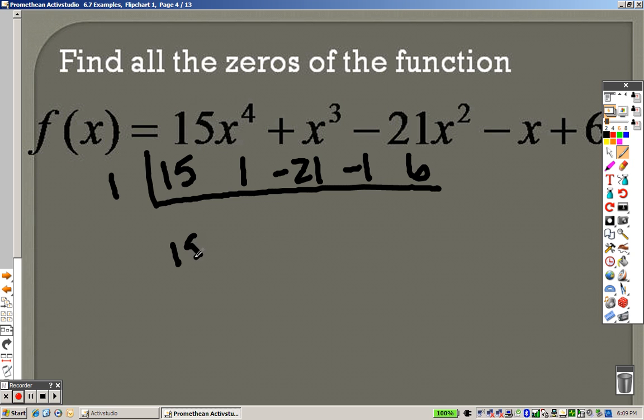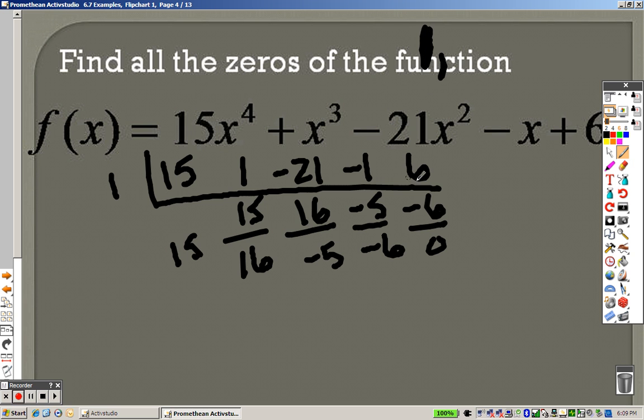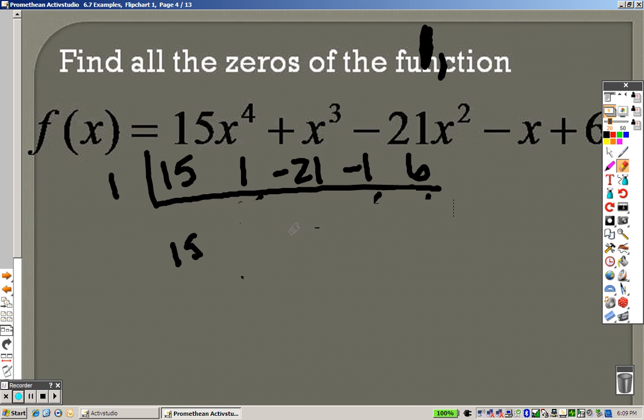So I bring down a 15. 15 times 1 is 15. I add them together to get 16. 16 times 1 is 16. I add them together to get negative 5. Negative 5 times 1 is negative 5. I add them together to get negative 6. Negative 6 times 1 is negative 6. I add them together to get 0. So that worked. Luckily enough, again, 1 worked. So I have a 1 as my answer. So far, so good. So let me quickly erase this and start again. So I tried out 1, and that worked. And now I don't remember what I had underneath. Probably should not have done that.